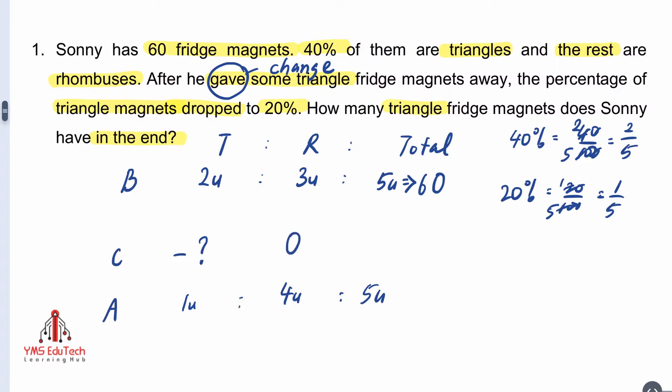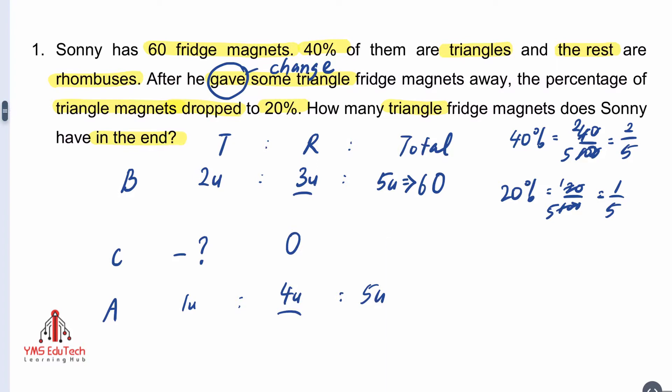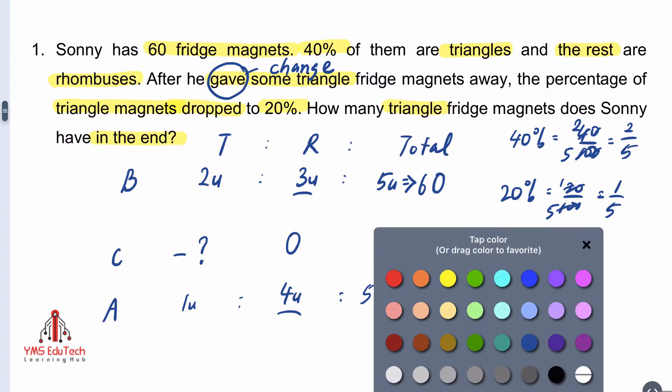There was no change involved for the rhombuses. Which means the 3 units and the 4 units were referring to the same number of rhombus magnets. Therefore, we need to find the first common multiple of 3 and 4, which is 12.